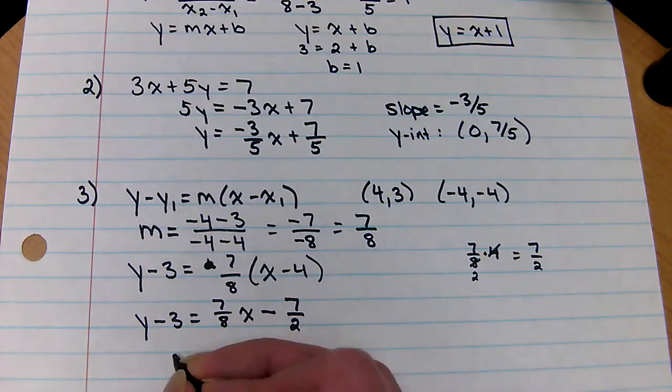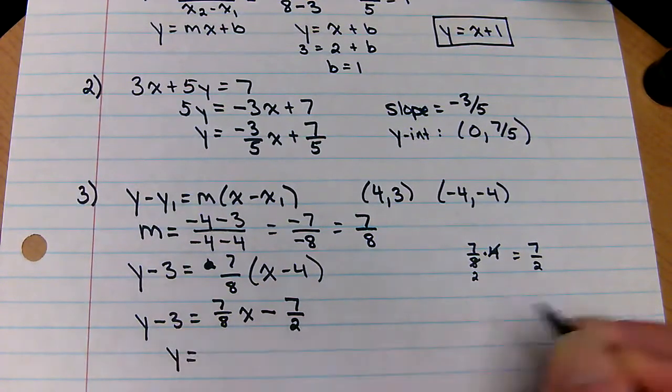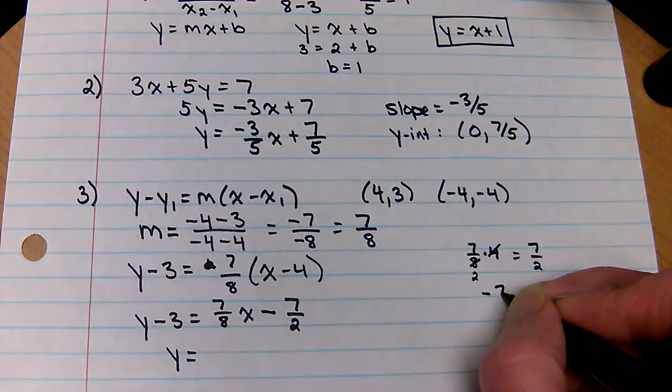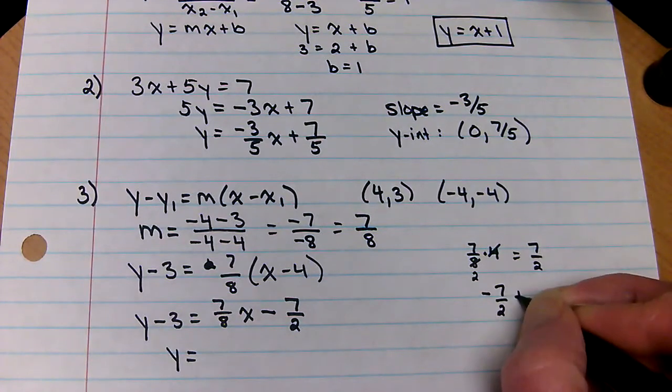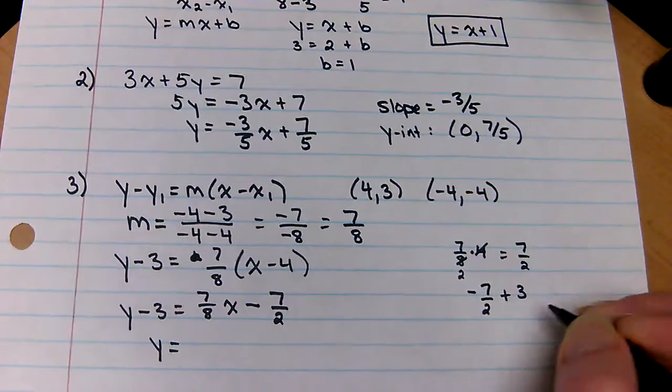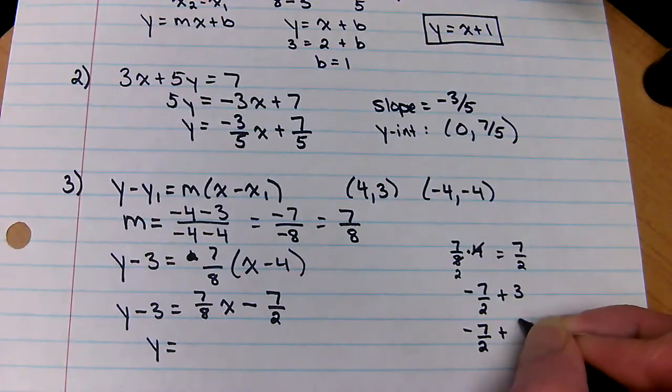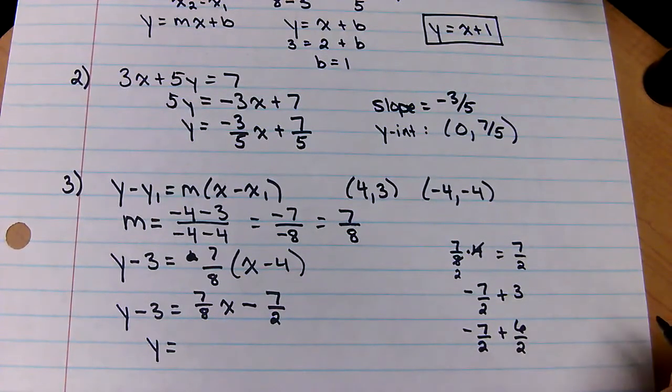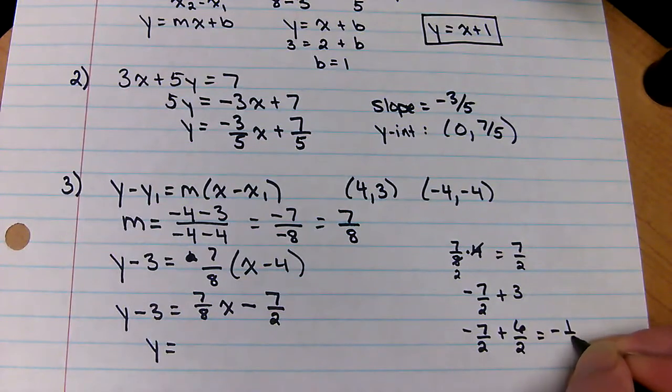Now we would add three to the other side. So if I took negative seven halves and added three, well that's really negative seven halves plus six halves. That would be negative one half.